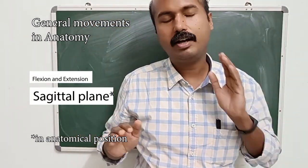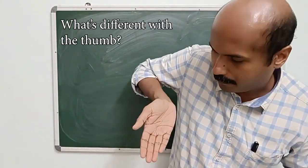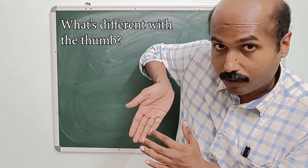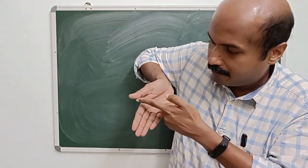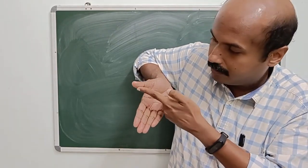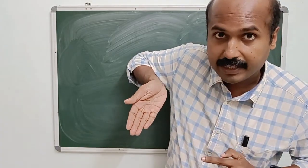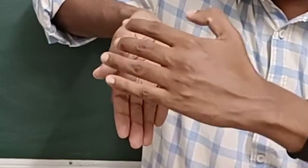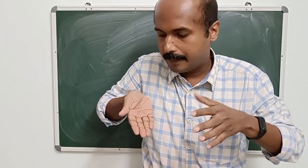This is the general rule, but the thumb is an exception. If you look at the thumb in the anatomical position, the pulp of the fingers are all facing forwards, but the palmar surface of the thumb is actually facing medially. So in the anatomical position itself, you can understand that the thumb's position is a little bit unique compared to the other fingers. Due to this reason, the movement of the thumb is also unique.